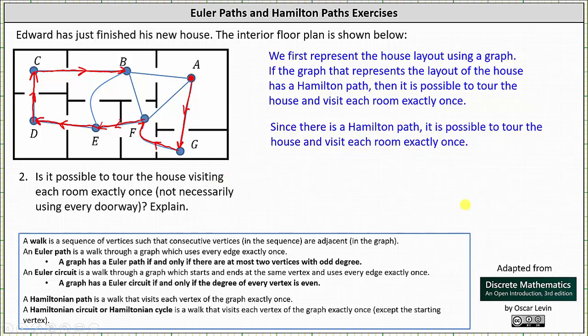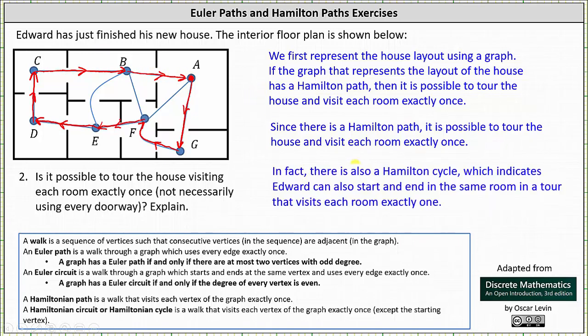Now this question doesn't ask, but notice how we could continue the walk and end back where we started by including this edge as part of the walk. This indicates there is also a Hamilton cycle, meaning Edward can also start and end in the same room in a tour that visits each room exactly once. I hope you found this helpful.